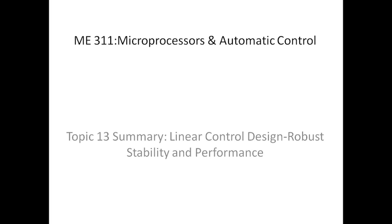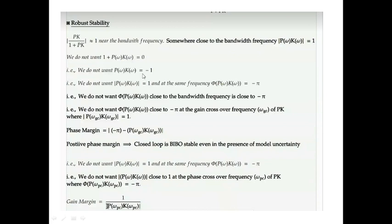It also simultaneously did a good job of high-frequency noise rejection. Now we'll see the aspect of robust stability and performance. We had seen a map PK/(1+PK). The denominator 1+PK is of particular importance because we don't want that to go to zero since the output would be not in control.